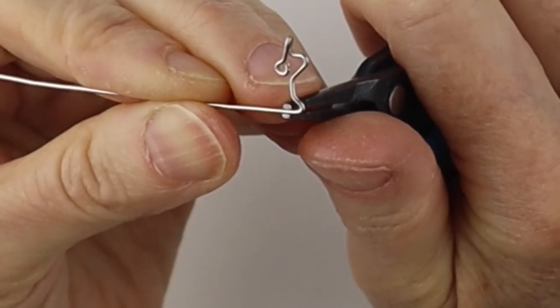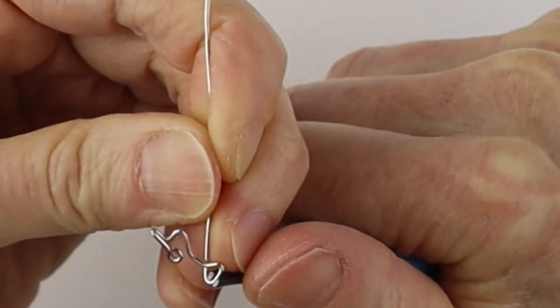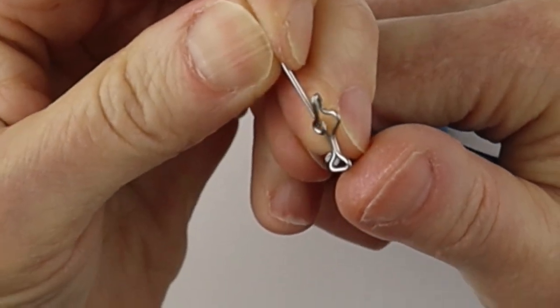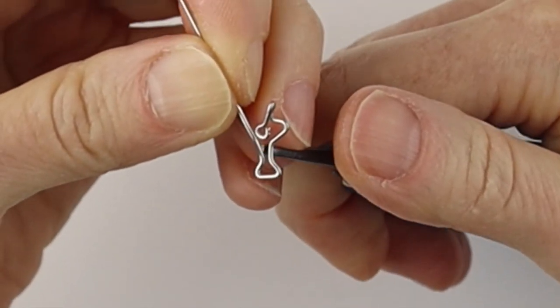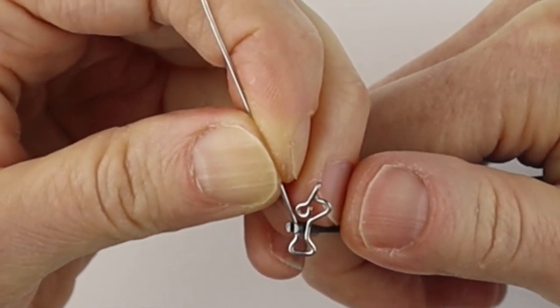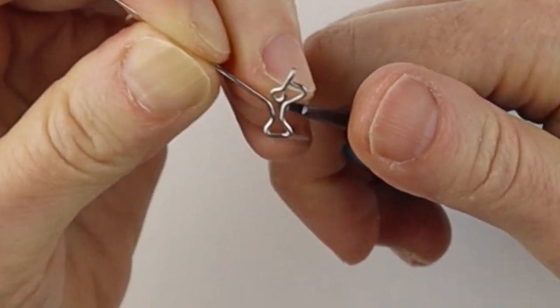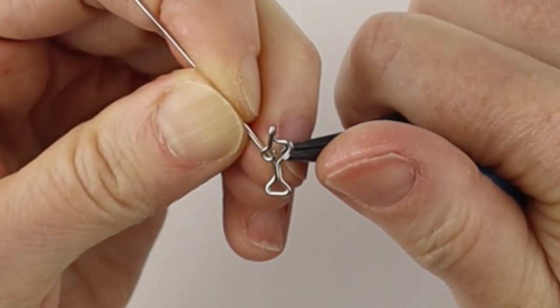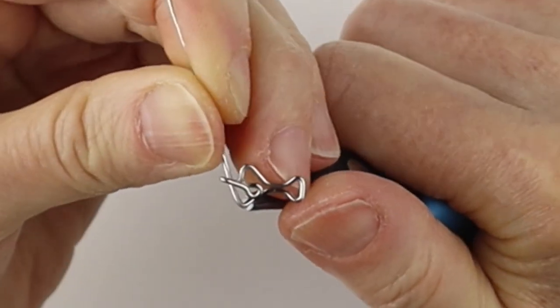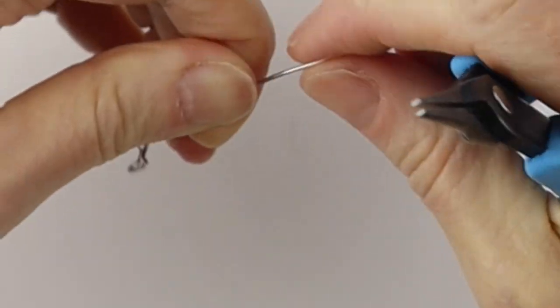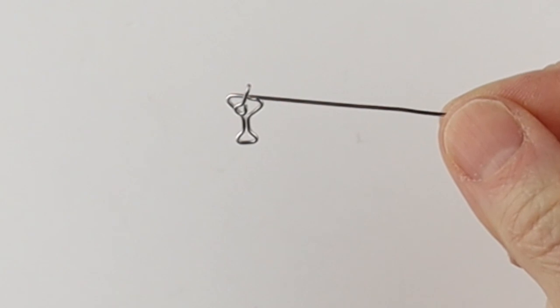and across, up, straight up. Pull it apart so you can access it and bend that straight up. Push it back in and bend that across at the top of the glass. There's your martini glass.